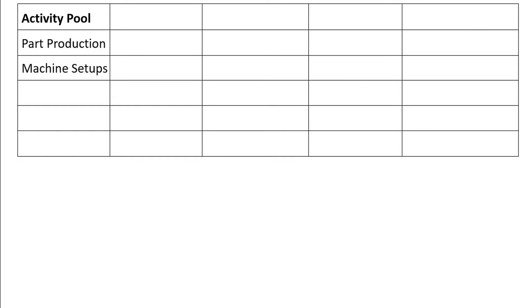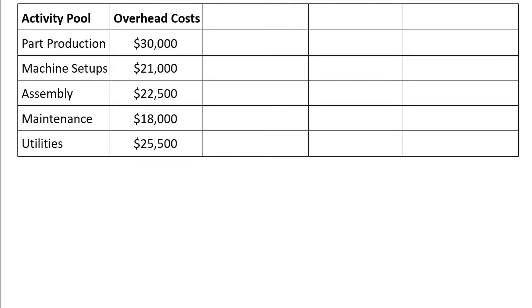Returning to our toaster example, instead of three activity pools, we're going to have five. The activity pools are part production, machine setups, assembly, maintenance, and utilities. You may remember from the past video that the company has $117,000 of overhead costs, and the company has determined that those overhead costs can be split between the five activities as shown.